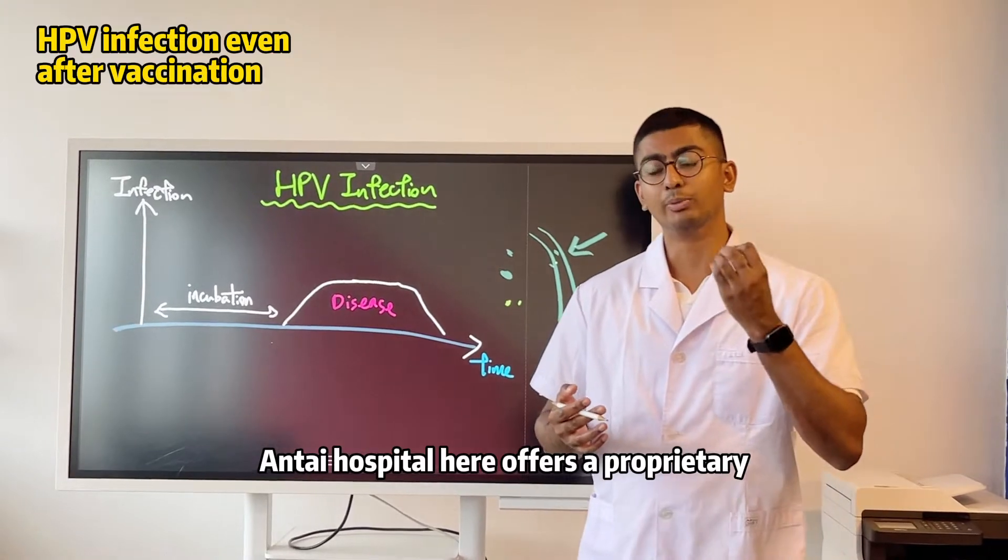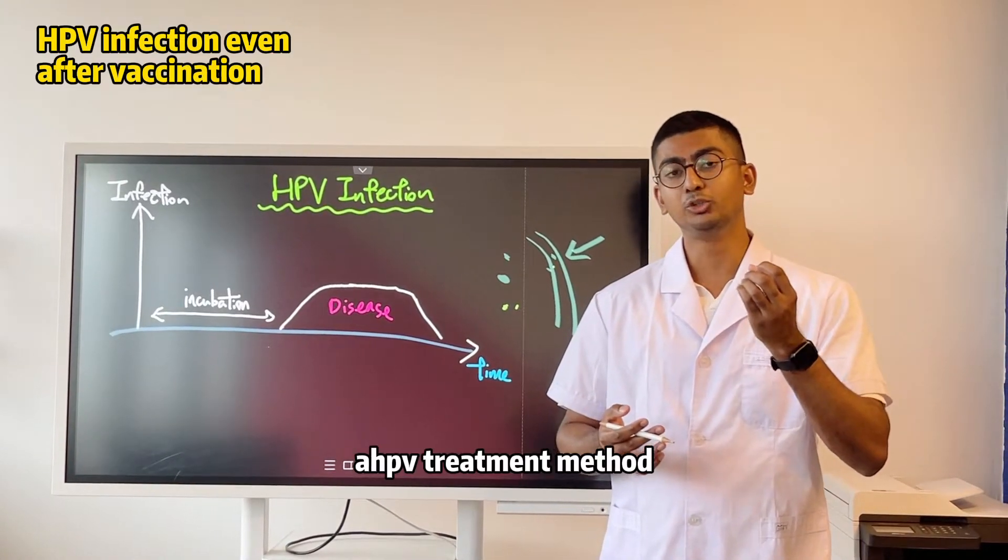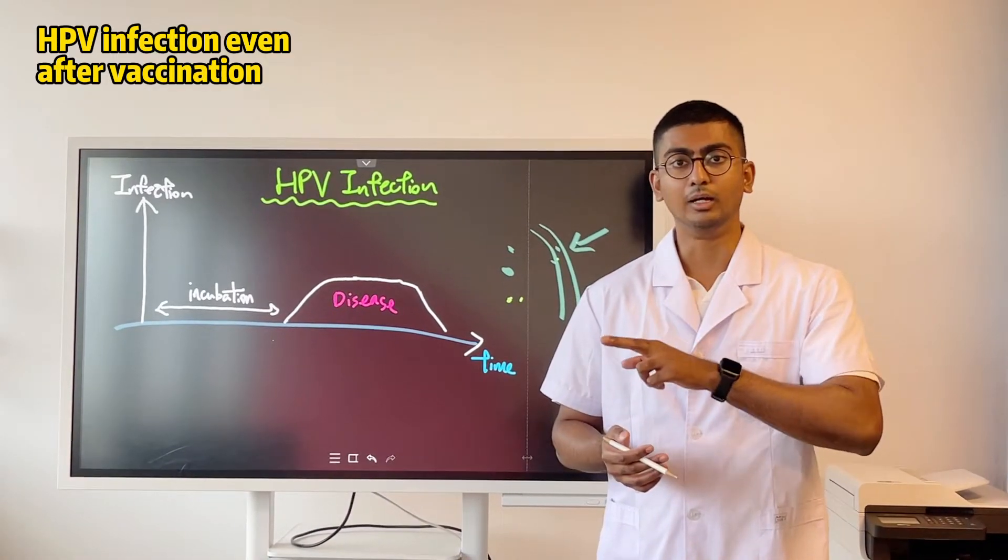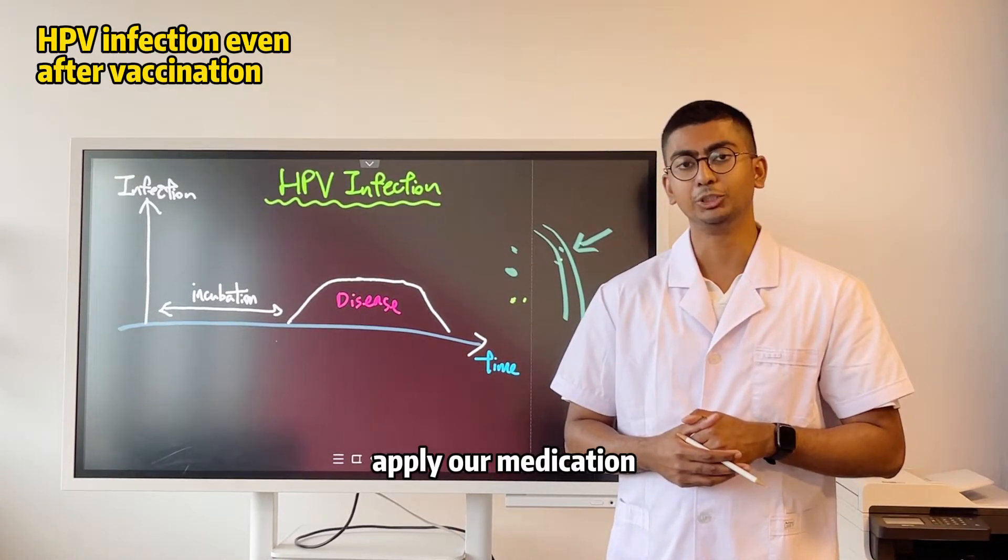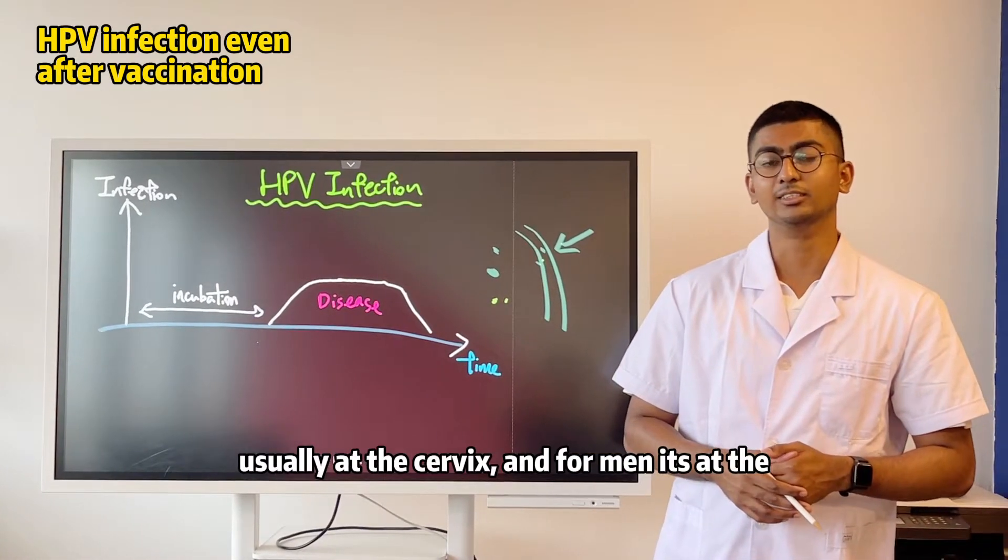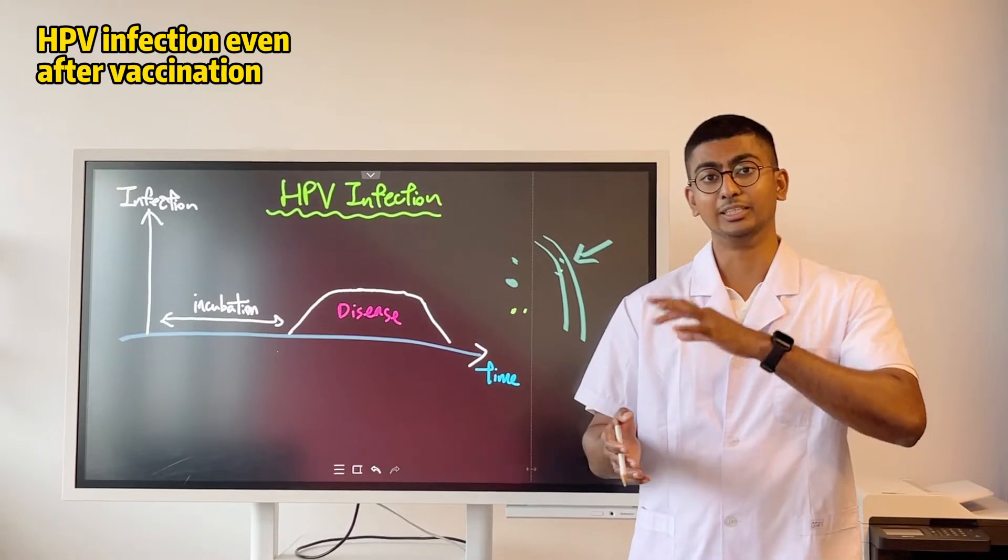Now, Anti-Hospitalia offers a proprietary HPV treatment method, which is a chemical ablation, a chemical treatment where we actually apply this medication on the areas of active infection. So for women, it's usually at the cervix, and for men, it's at the genital area.